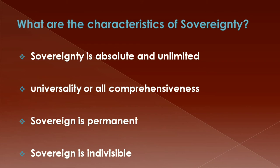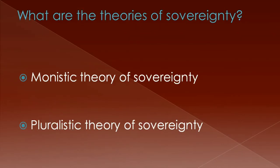Another characteristic of sovereignty is its universality or all-comprehensiveness. The third one is that the sovereign is permanent because the state itself is permanent. The fourth one is that the sovereign is indivisible, because if sovereignty is divided there is a possibility of two or more sovereigns arising.